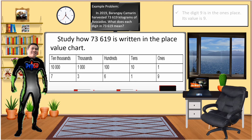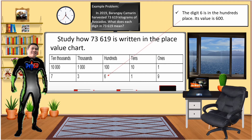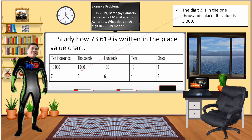The digit 9 is in the ones place; its value is 9. The digit 1 is in the tens place; its value is 10. The digit 6 is in the hundreds place; its value is 600. The digit 3 is in the one-thousands place; its value is 3,000. The digit 7 is in the ten-thousands place; its value is 70,000.